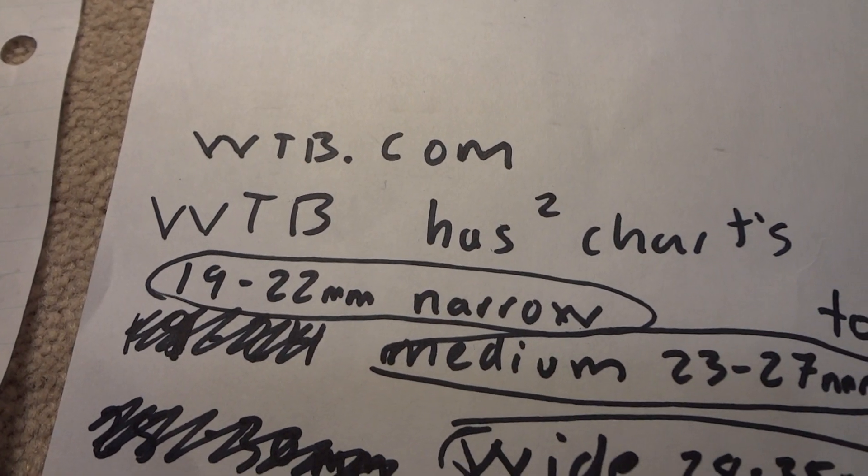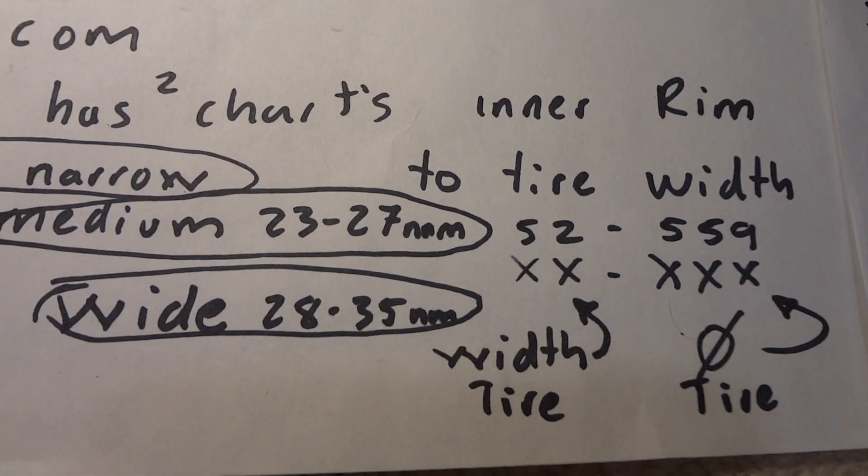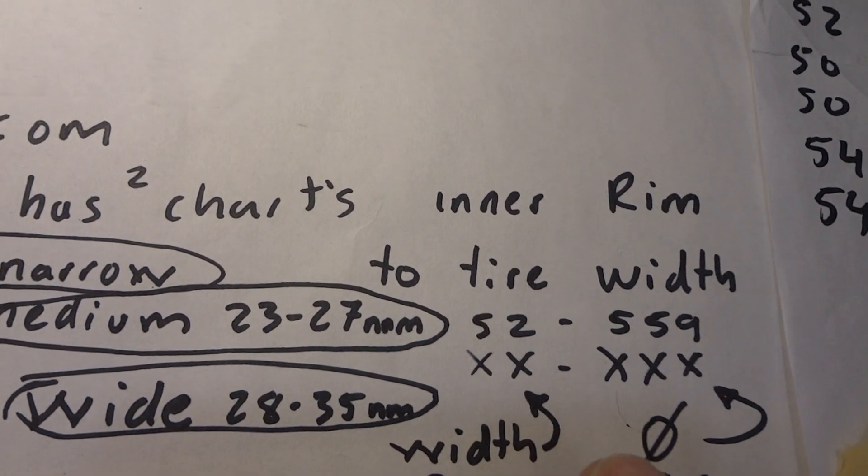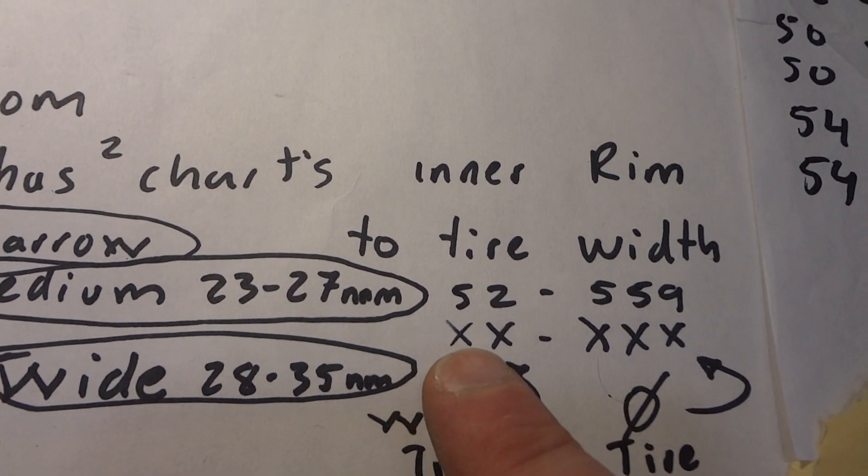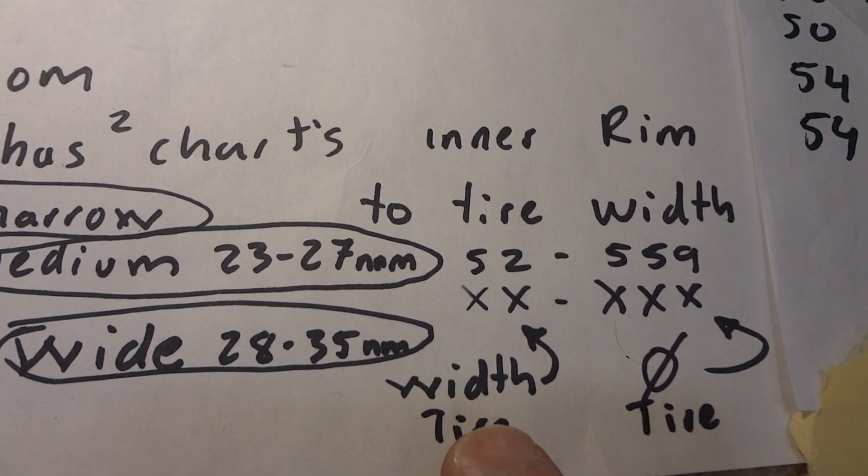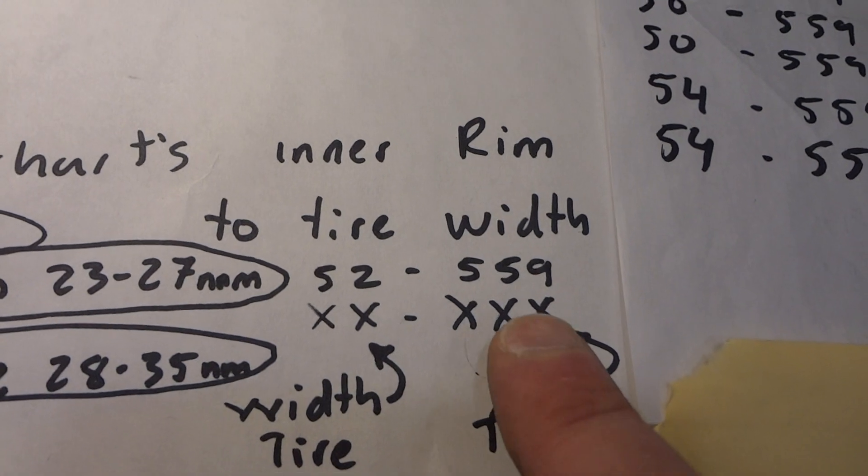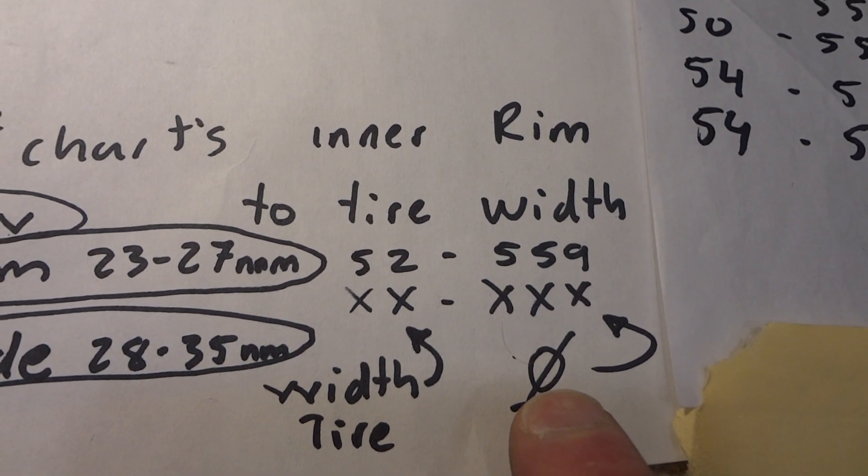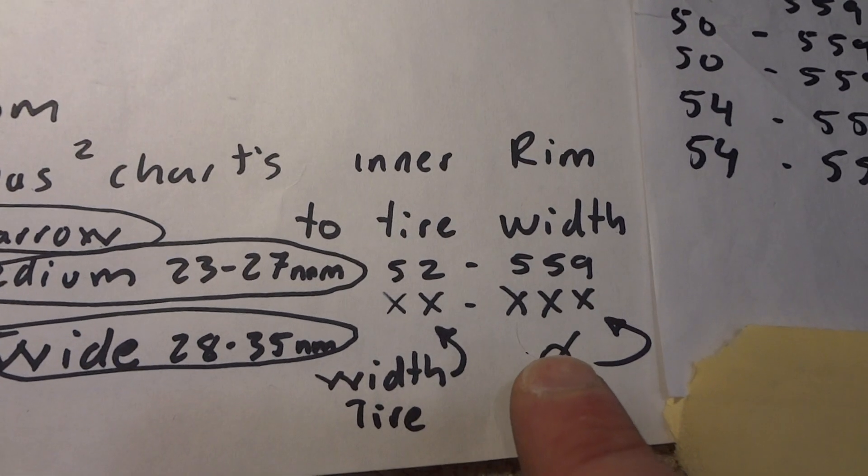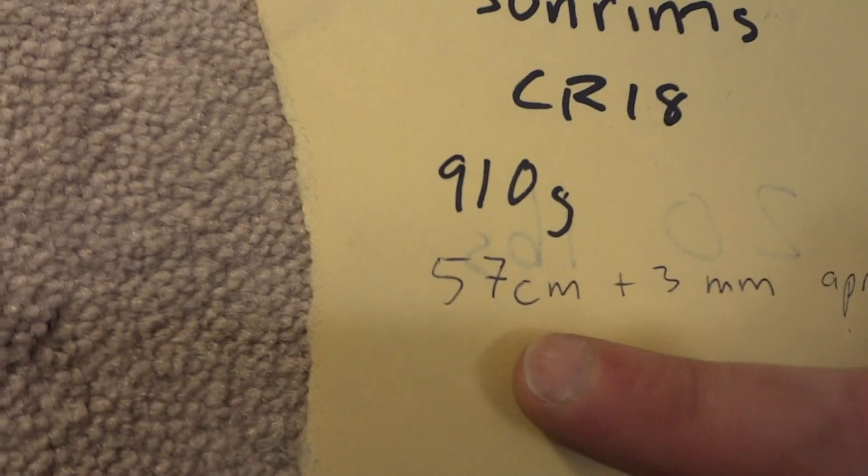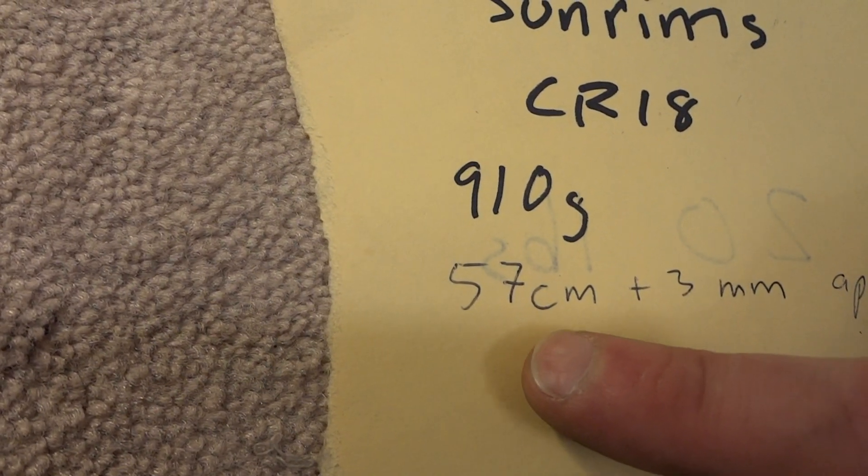Those guys are making rims and they have two charts on there, one for mountain bike and one for road bike. I'm looking at the mountain bike chart. It says those first two numbers are the width of the casing. So the casing is the tire, and the 559 is the diameter that's fitting into the rim. So that's like the inside diameter of the tire. It's going to be smaller than the outside diameter, which I measured to be 57 plus or minus one or two millimeters.